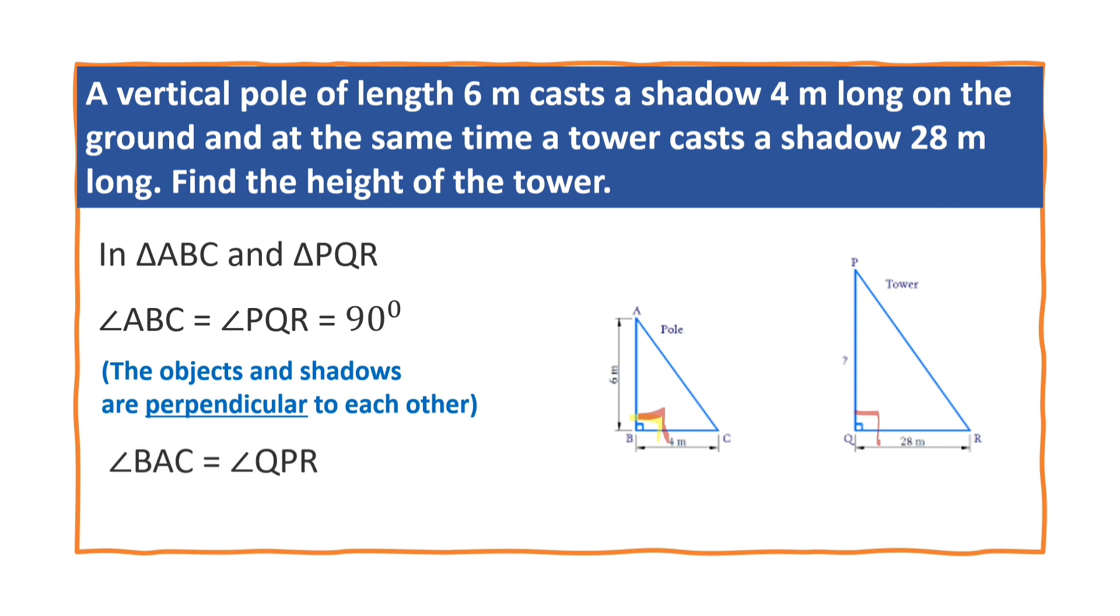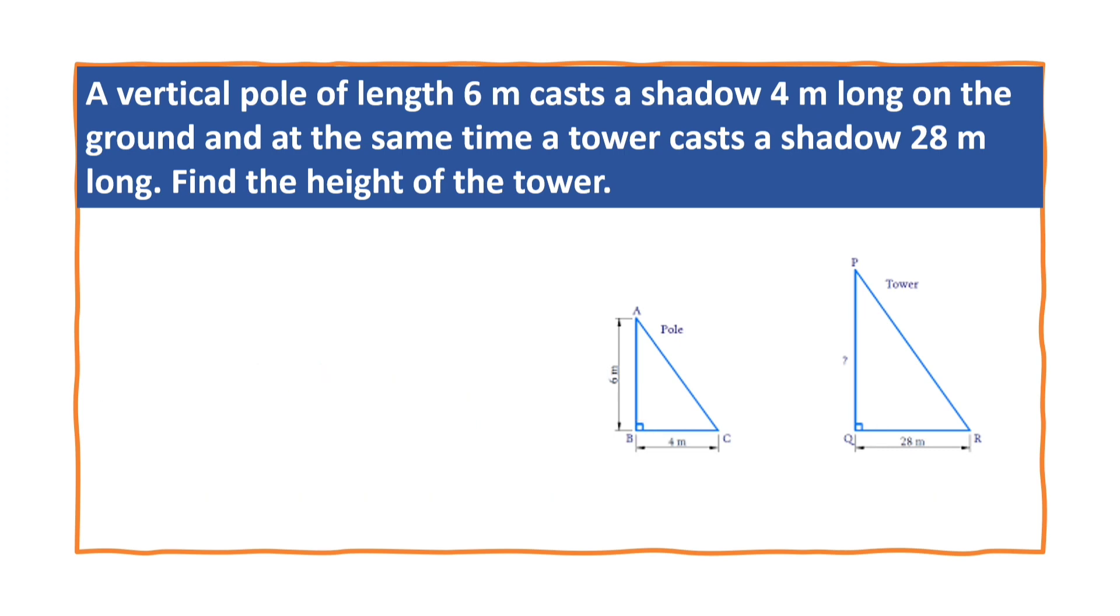And angle A is equal to angle P, means angle BAC is equal to angle QPR. Why? Sunrays fall on the pole and tower at the same angle at the same time.